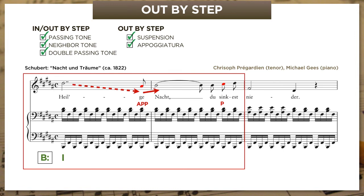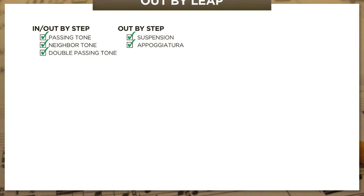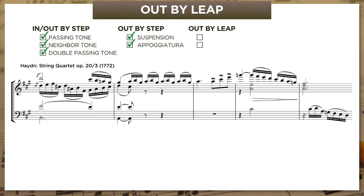So far, we've moved by step out of all our non-chord tones—think of this as the rule rather than the exception. The five idioms we've looked at are the most common non-chord tones in classical music. But there are three more to consider, and two of them involve moving not by step but by leap out of a non-chord tone.